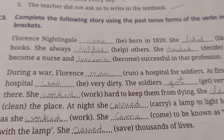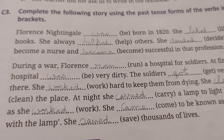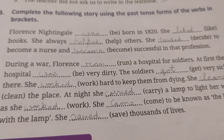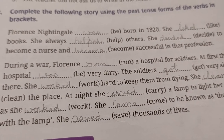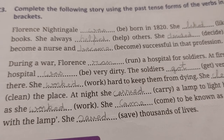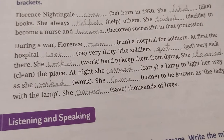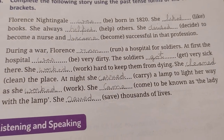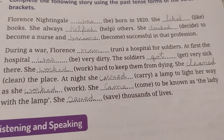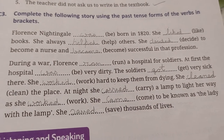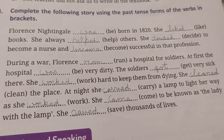In C3, we have a story given with verbs in brackets and we have to use the past tense form. Florence was born in 1820. She liked books and she always helped others. She decided to become a nurse and became successful in that profession. During a war, Florence ran a hospital for soldiers. At first the hospital was very dirty and the soldiers got very sick there. She worked hard to keep them from dying.